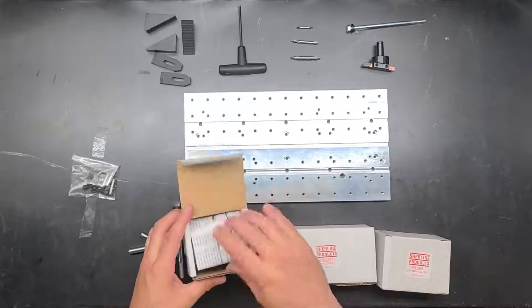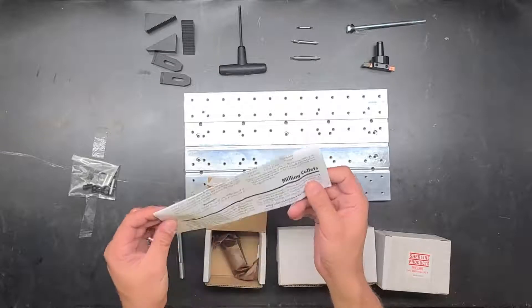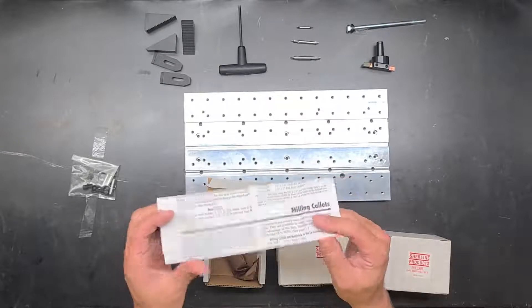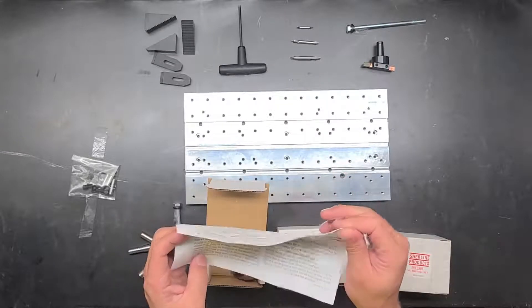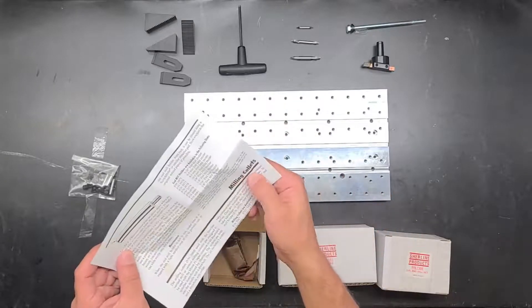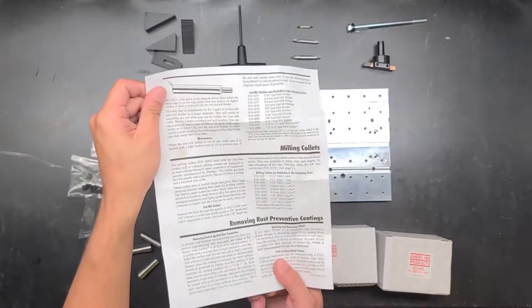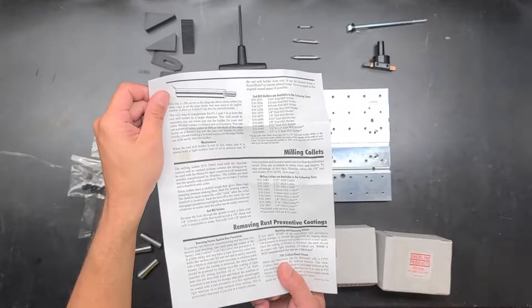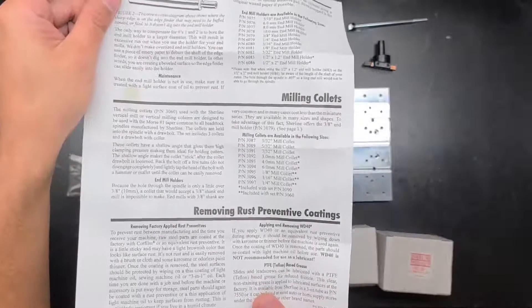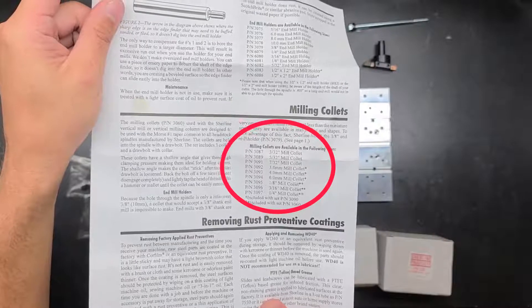Okay, so apparently three eighths is the most common end mill size. So an instruction pack. Oh, that's a nice little thing here that talks about milling collets and shows all the sizes. Unfortunately no three eighths, but it shows their metric as well as their decimal and fractional. So it looks like it goes up to a quarter inch.